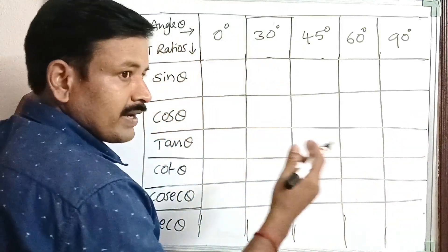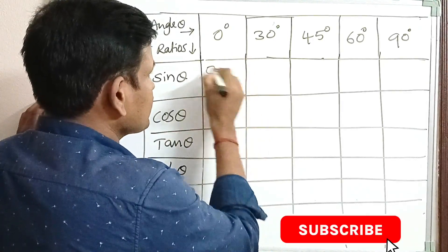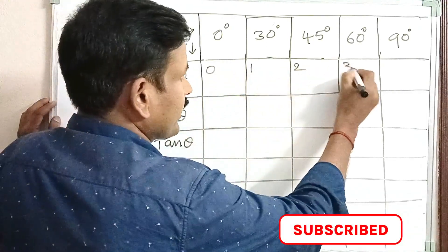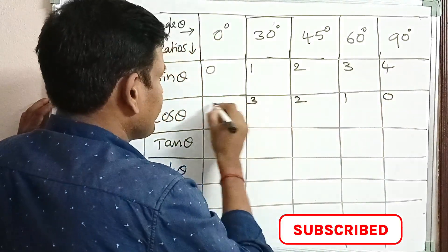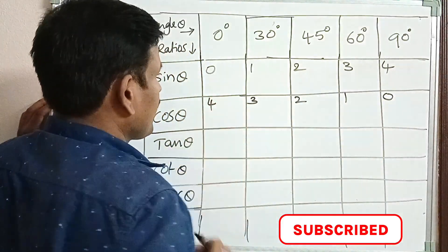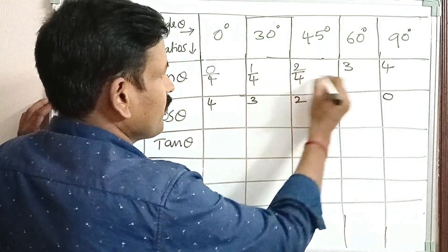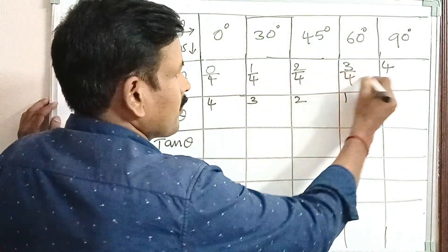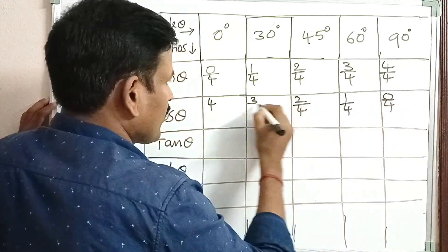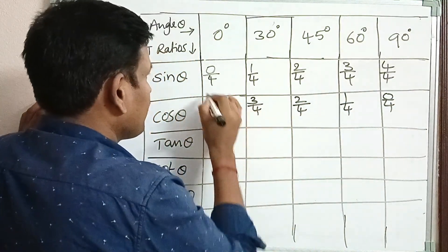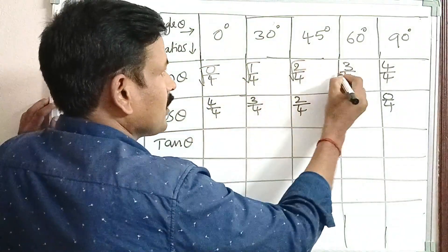Let us write this now. First, write the numbers 0, 1, 2, 3, 4 and again 0, 1, 2, 3, 4. Now divide all these numbers by 4 — divided by 4 for all these numbers — and then apply the square root.